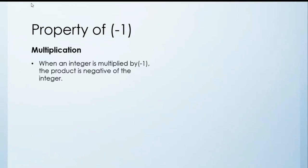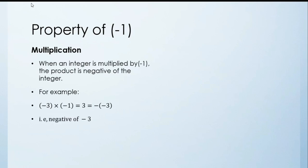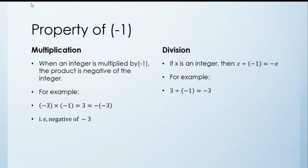Property of minus one — Multiplication. When an integer is multiplied by minus 1, the product is the negative of that integer. For example, (−3) × (−1) = 3, which is the negative of −3. For division: if x is an integer then x ÷ (−1) = −x. For example, 3 ÷ (−1) = −3.